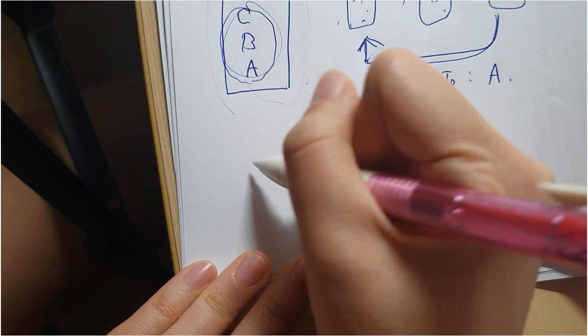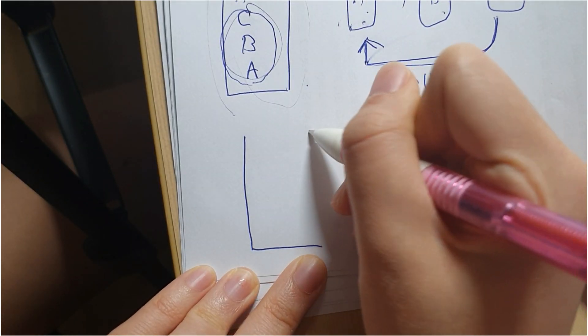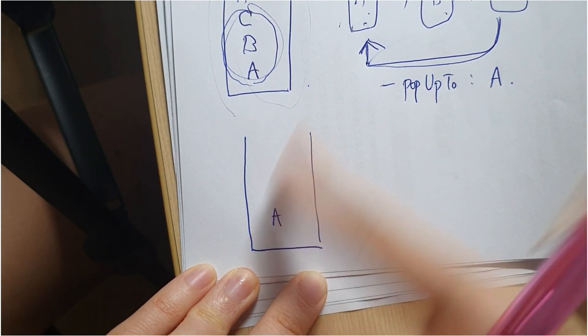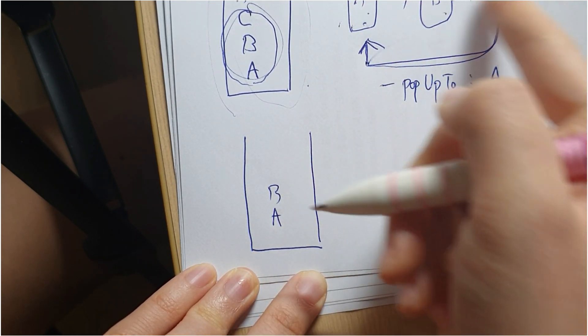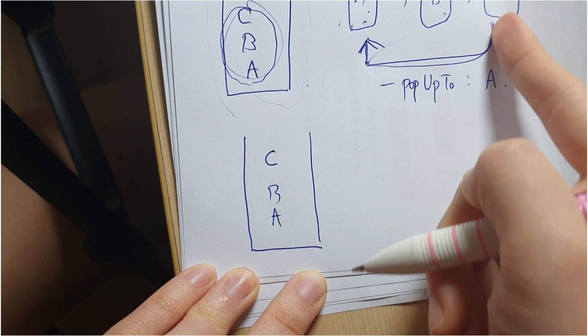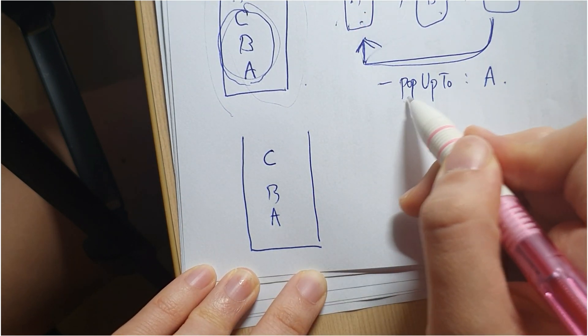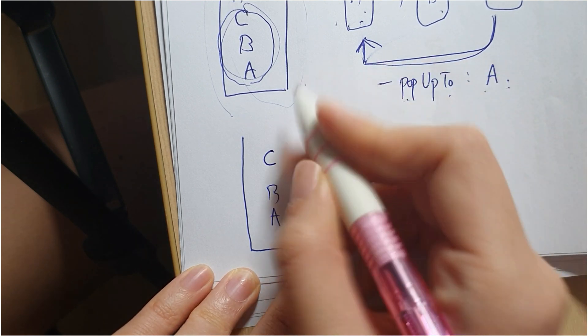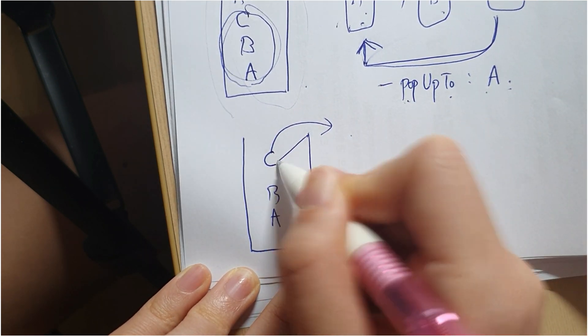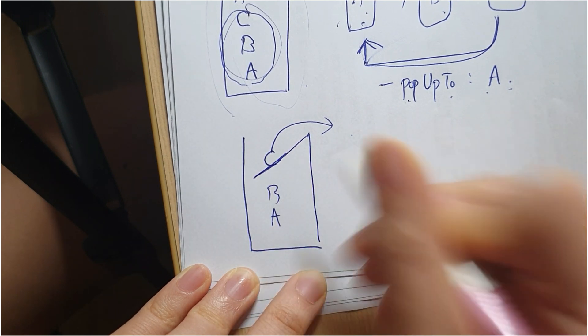So what this means is, we have A to B, B to C, but when we go C to A, before we navigate to A, we're going to pop up to A first. Which means I'm going to pop C first, like this.